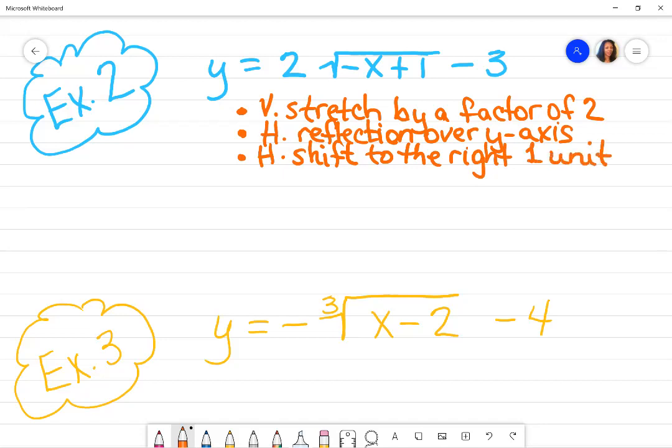And then finally, what's going on with K? Since there is a negative sign, that means it's going down. And since it's outside of the radical, that means it's vertical. So there is a vertical shift down three units.